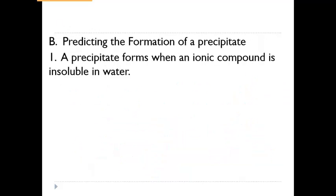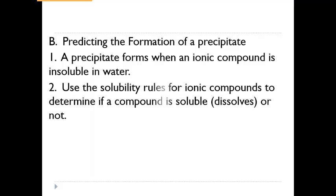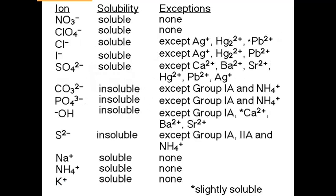We can also predict whether a precipitate will form. A precipitate forms if the compound is insoluble — soluble means it dissolves, insoluble means it does not. To know if something is insoluble we either test it experimentally or use a solubility rules chart for ionic compounds. For example, anything paired with NO₃⁻¹ is soluble in water with no exceptions — they will all dissolve and remain aqueous.